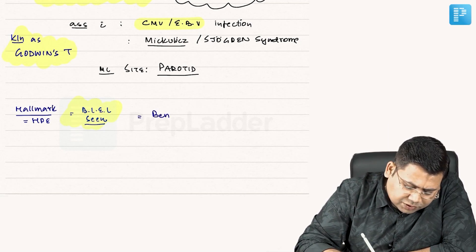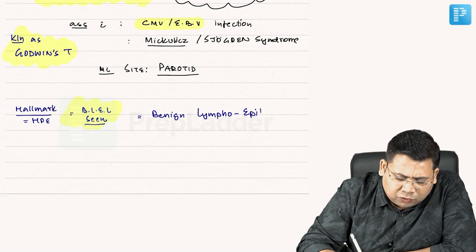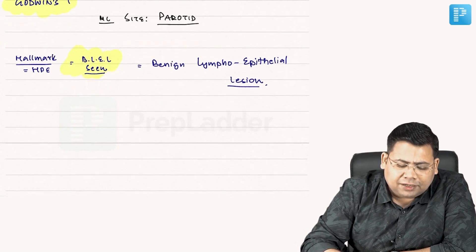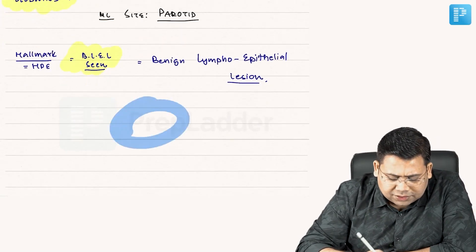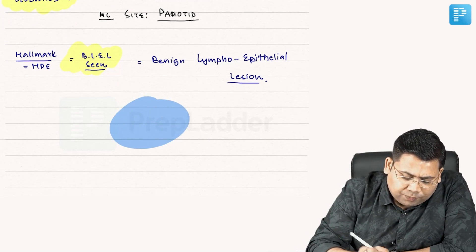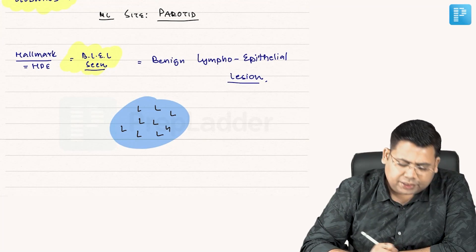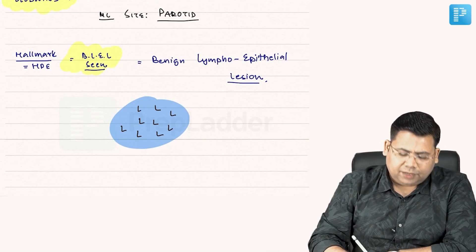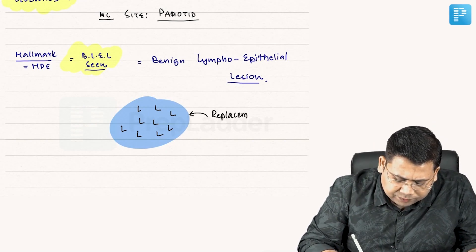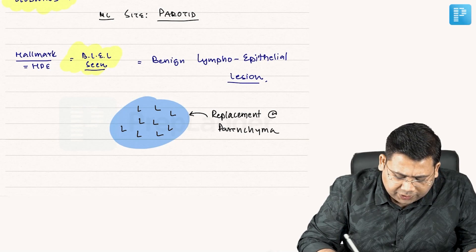BLEL stands for Benign Lymphoepithelial Lesion. This is nothing but slow infiltration of lymphoepithelial cells into the salivary gland parenchyma. In the parotid gland, there is slow progressive entry of lymphocytes — replacement of the gland parenchyma by lymphocytes — and this is what is known as BLEL.